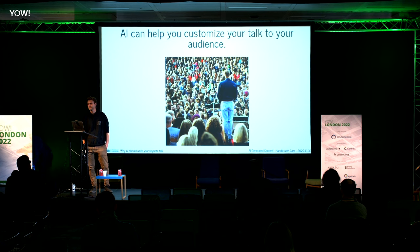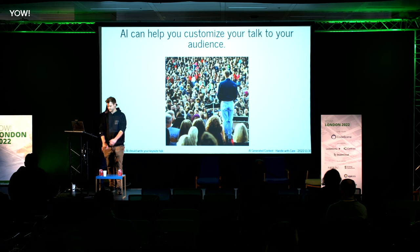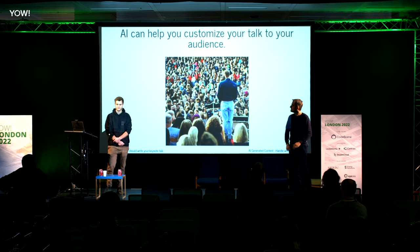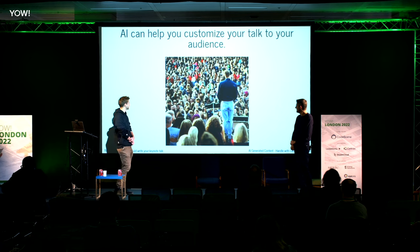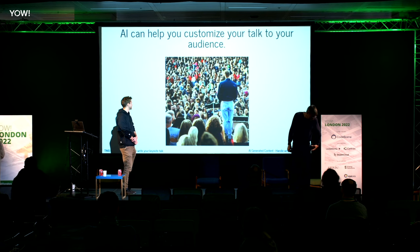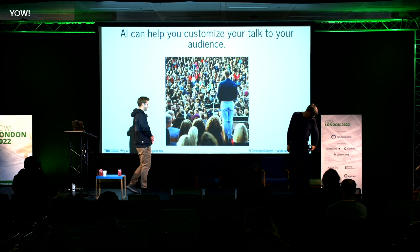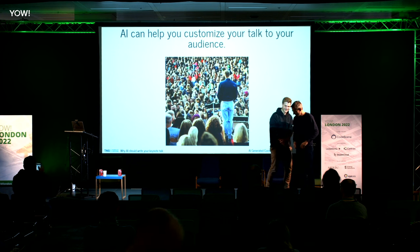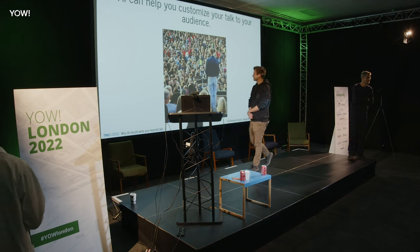If you're giving a keynote talk, you want to make sure that your audience is engaged and invested in what you're saying. After all, a keynote is supposed to be a motivating and inspiring speech that gets people thinking about your message long after the talk is over. So how can AI help you make sure that your talk is tailored to your audience? For one thing, AI can help you analyze your audience and figure out what they're interested in — by understanding their demographics, interests, and needs, you can make sure that your talk hits all the right points. Additionally, AI can help you keep track of how your audience is reacting to your talk in real time, so if they start to look bored or confused, you can adjust on the fly and keep them engaged.